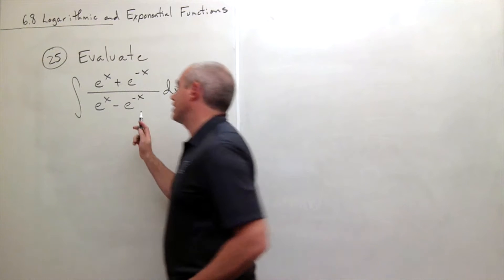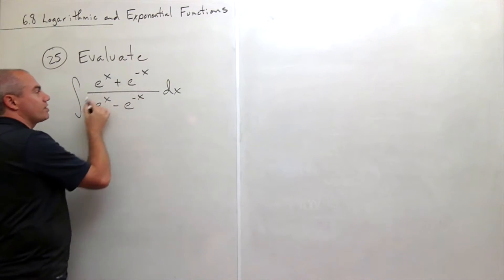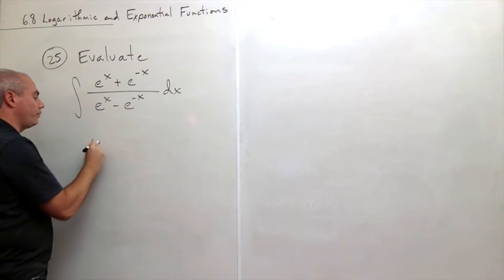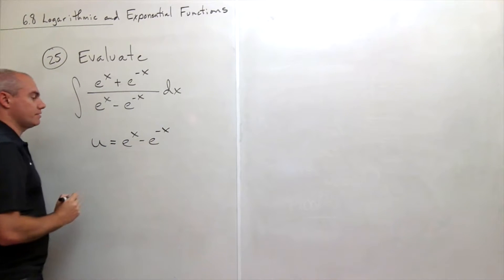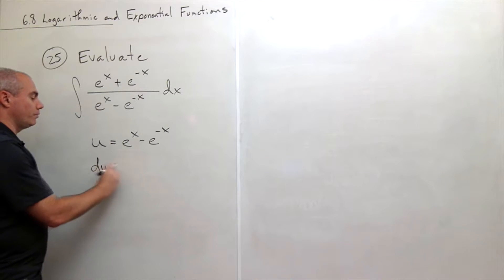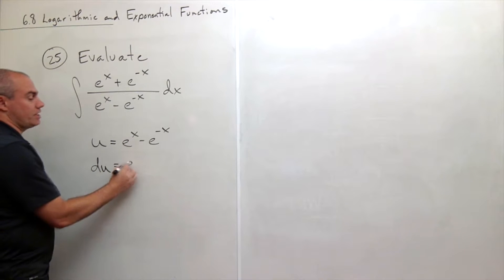And the right trick is to make a substitution for what's on the bottom. So if we let u be e to the x minus e to the minus x, then du would be the derivative of that which is e to the x,